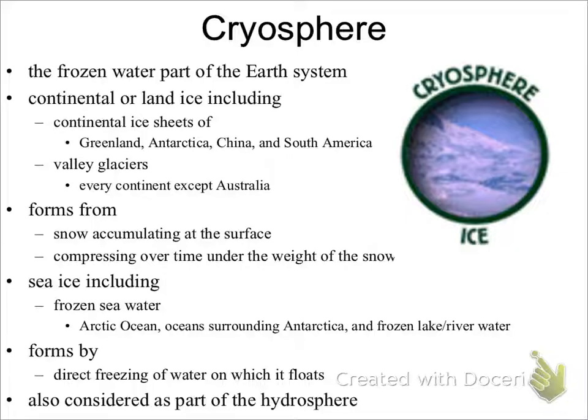The cryosphere also includes sea ice, or frozen seawater, such as that on the Arctic Ocean and the oceans surrounding Antarctica, and frozen lake or river water. It is formed by the direct freezing of water on which it floats. The cryosphere is considered part of the hydrosphere. When scientists talk about the cryosphere, they mean places where water is in its solid form, as snow or ice.